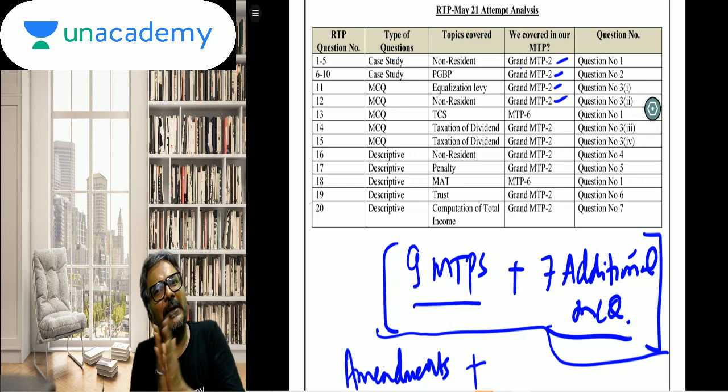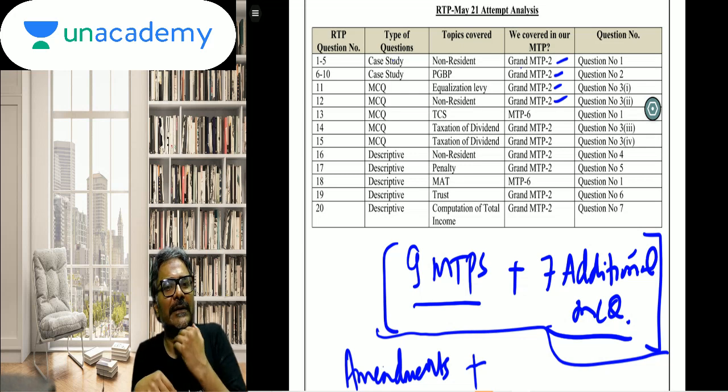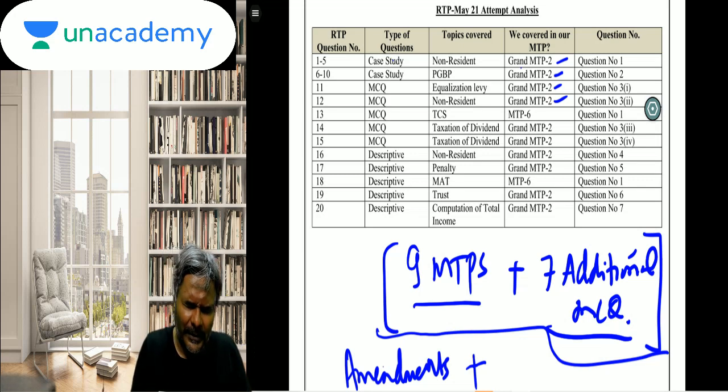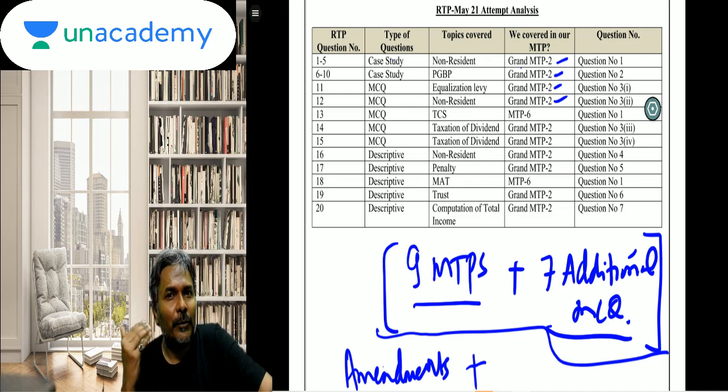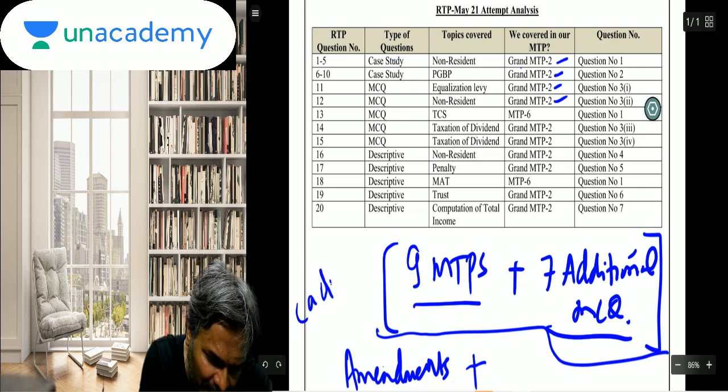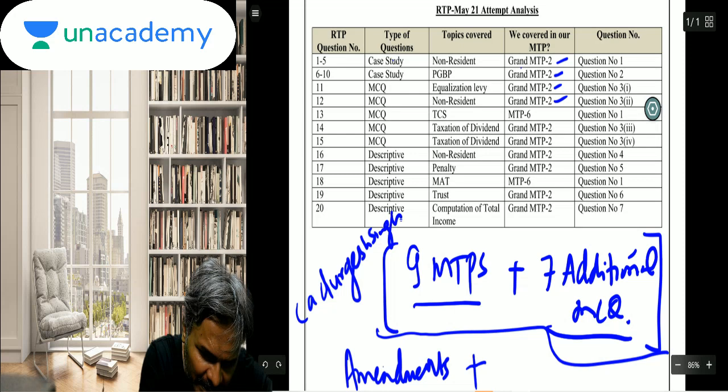Students, I'll tell you one thing now. All these rank holders - All India first, All India second, All India third - they all referred to our MTPs. In fact, they've already commented on this, and I want you to have the benefit of this too. Students, the MTPs are in PDF form. If you're on the Telegram channel CA Durgesh Singh, you'll get access.